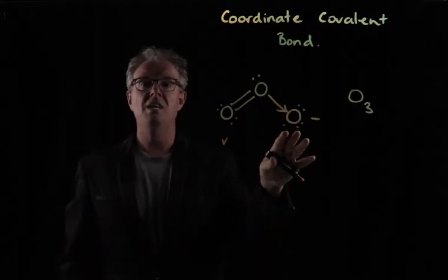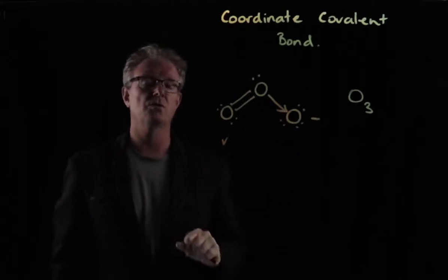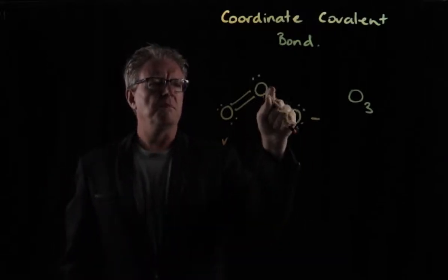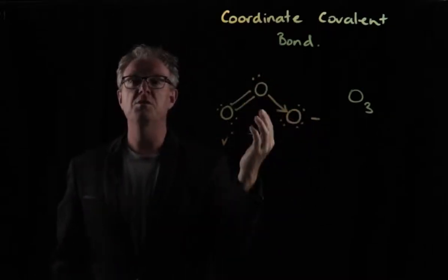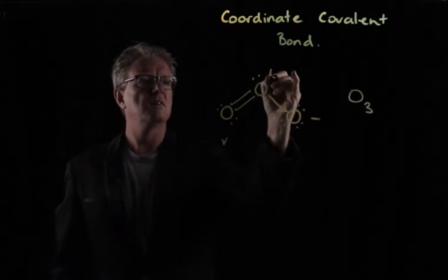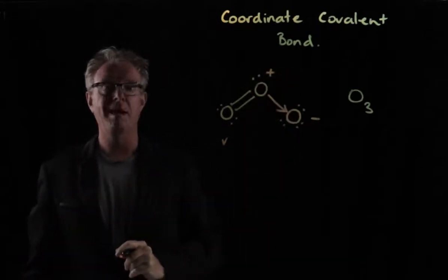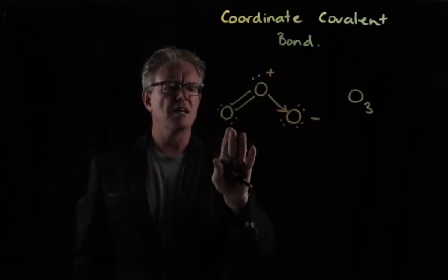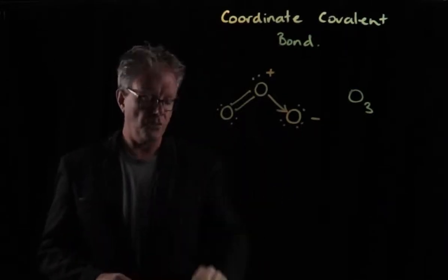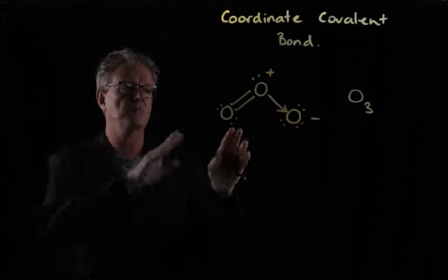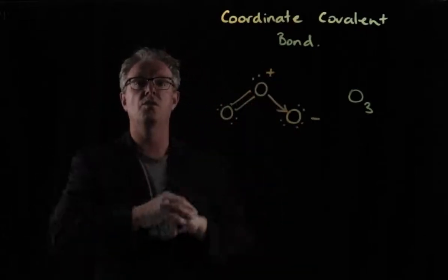We can work formal charge out mathematically, but not in this course. What does that mean up here? Well, it means that if some of these electrons are now spending a little bit more time down here, this oxygen here is a little bit deficient sometimes. And so it has a formal charge of plus. So this is a Lewis structure, one possible Lewis structure for ozone. And because we've got the arrow there, we're saying there's a coordinate covalent bond.